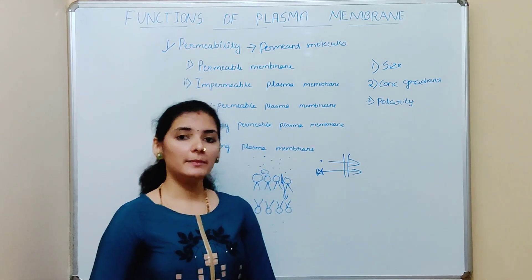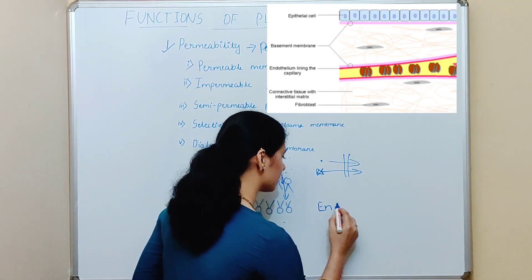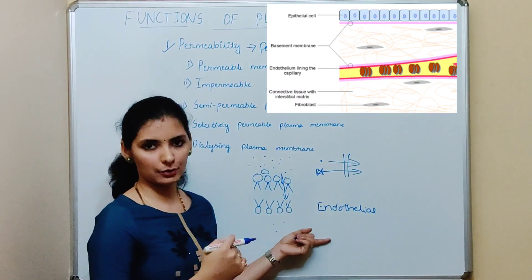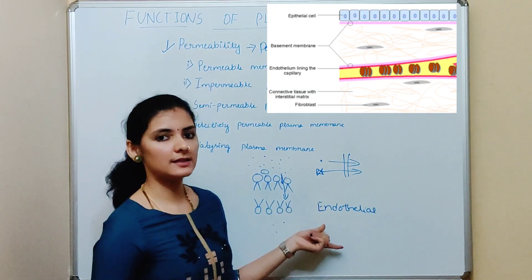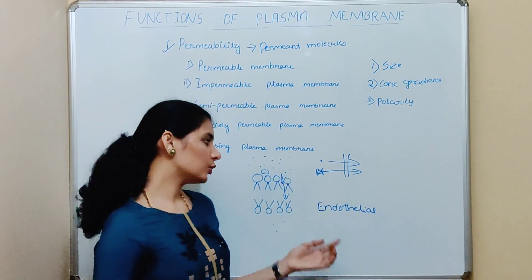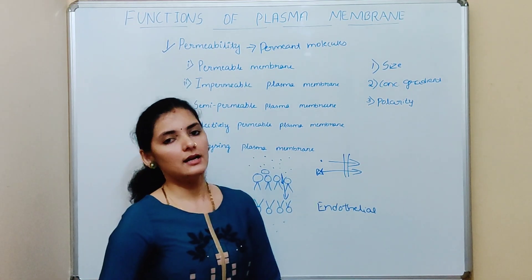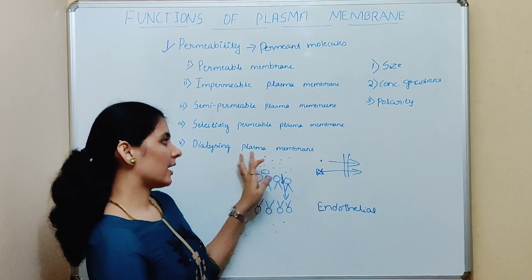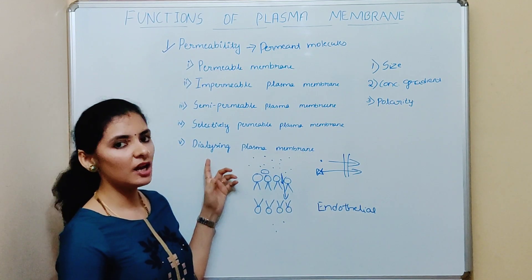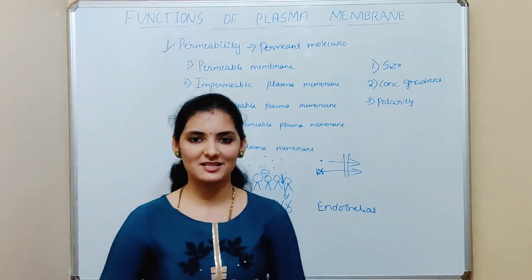The fifth type is the dialyzing plasma membrane. The plasma membrane of certain cells has an extraneous coat around it. The example is endothelial cells — all endothelial cells have a basement membrane below them. The plasma membrane of endothelial cells together with the basement membrane acts as a dialyzer. Water and crystalloid particles are allowed to pass through this plasma membrane with the aid of hydrostatic force, which is why it is called the dialyzing plasma membrane. That covers all five types of plasma membrane based on permeability, and concludes the permeability function of the plasma membrane.